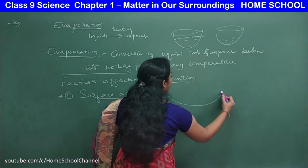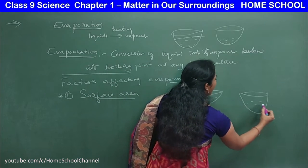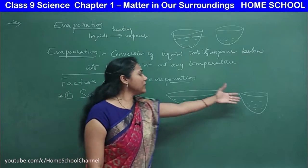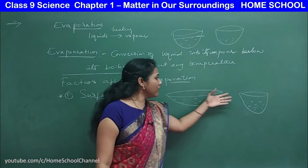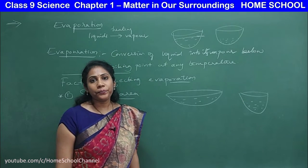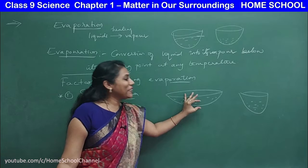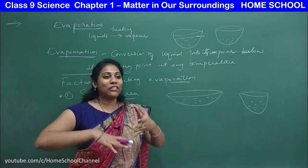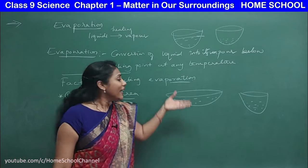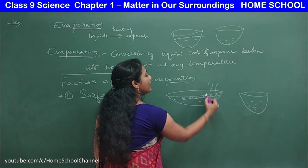Say I have one big bowl and one small bowl, both with 10 ml of water, kept near a window. In which bowl would you observe faster evaporation? In the bigger, wider bowl — because the surface area is more. Evaporation is a surface phenomenon, so the molecules at the surface evaporate first. In the bigger bowl, many more molecules occupy the surface, so more evaporation occurs.